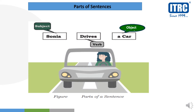Here is a diagrammatic example: 'Sonia drives a car.' Who is doing the action? Sonia — so Sonia is the subject. What is she doing? Driving — so 'drives' is the verb. On what is the action occurring? The car — so 'car' is the object. This is how parts of a sentence work: subject, verb, and object.